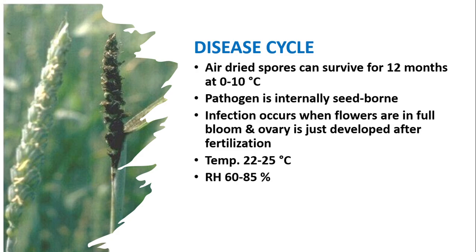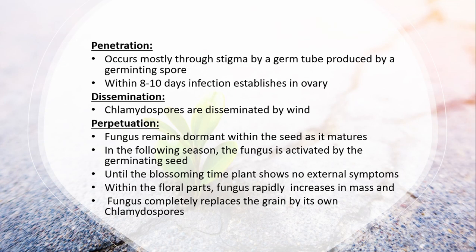Regarding the disease cycle: air-dried spores can survive for almost 10 to 12 months at 0 to 10 degrees centigrade. The pathogen is internally seed-borne. Infection occurs when flowers are in full bloom — that is why this disease is called the blossom-penetration type — and ovaries are just developed after fertilization. Conducive temperature is 22 to 25 degrees centigrade at a relative humidity of 60 to 85 percent. Penetration occurs mostly through the stigma by a germ tube produced by the germinating spores.